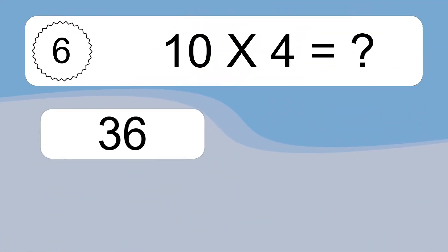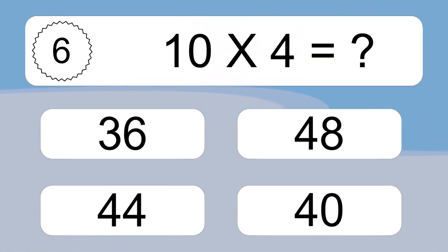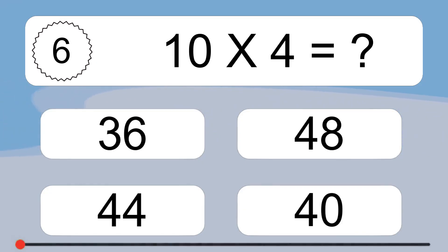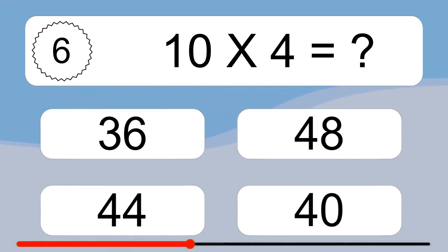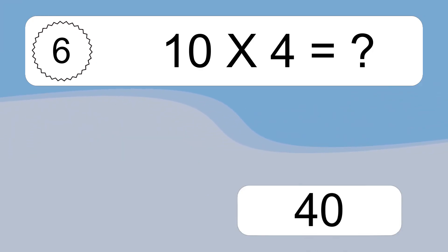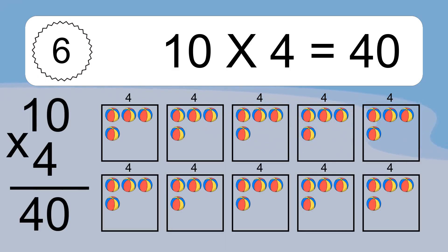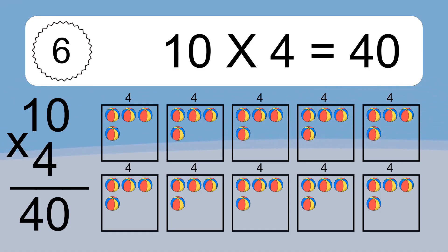10 times 4 equals what? 10 times 4 equals 40. We have 10 boxes, and each box has 4 colorful balls inside. If you count all the balls in all the boxes together, you will have 10 times 4 balls. This equals 40 balls.